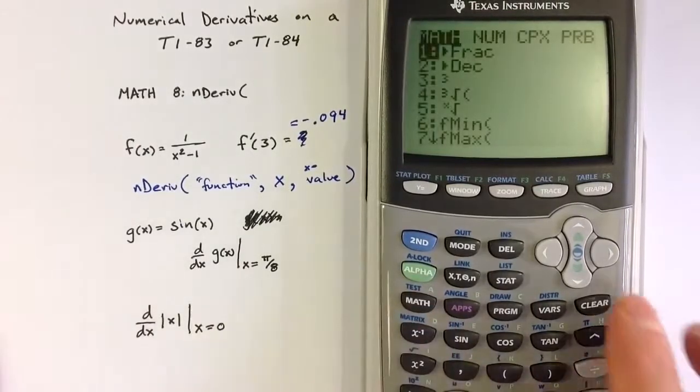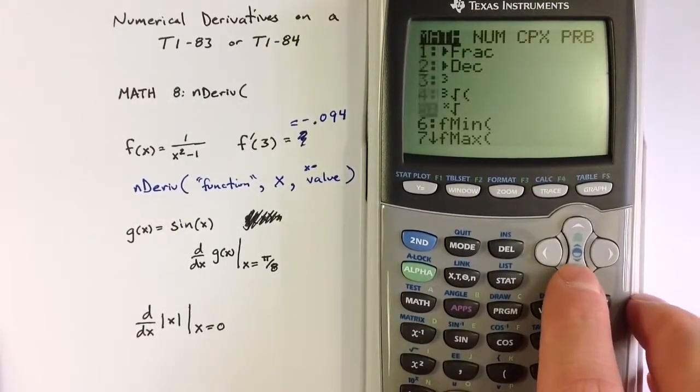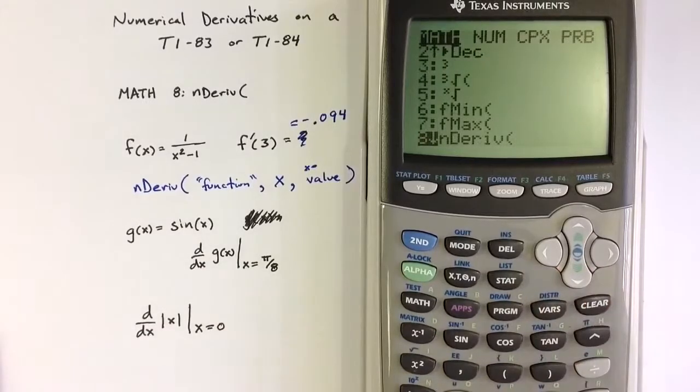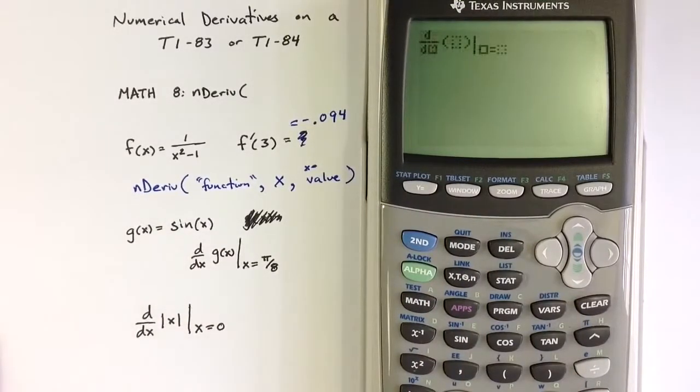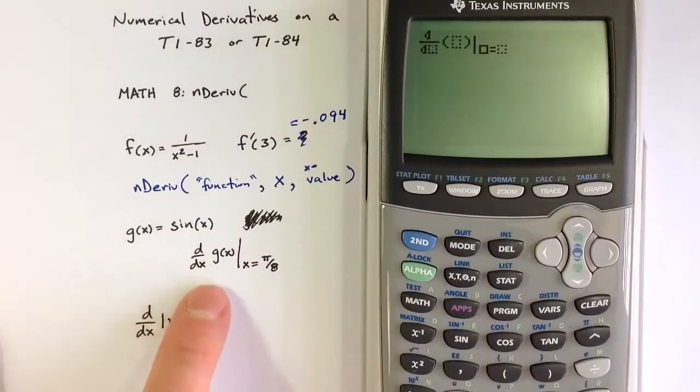If I go to the Math menu and down to Option 8, I could just type the number 8 to get to the nderive command, but let me go down to the number 8 and then hit Enter.